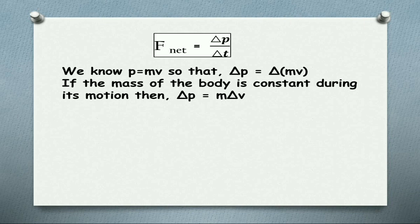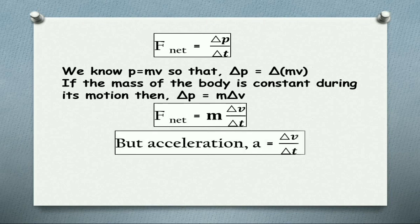But mass is constant. Therefore delta P can be written as M into delta V. So F net equals M delta V by delta T. But acceleration A equals rate of change of velocity, delta V by delta T. Substituting this, F net equals M into A, mass into acceleration.